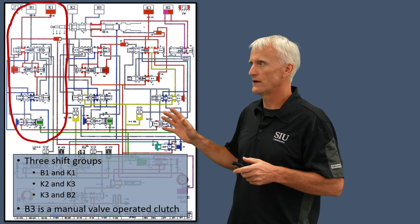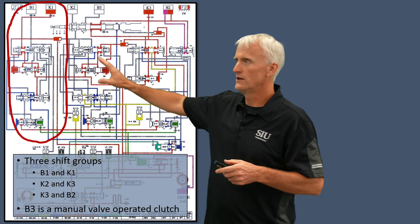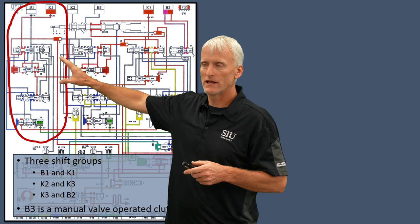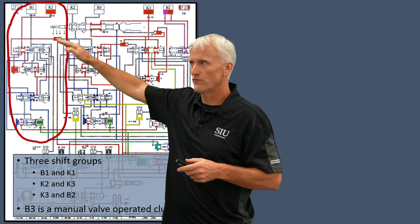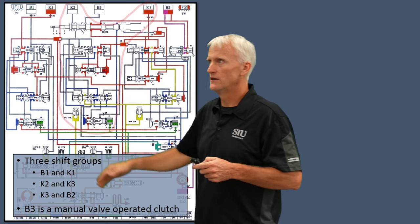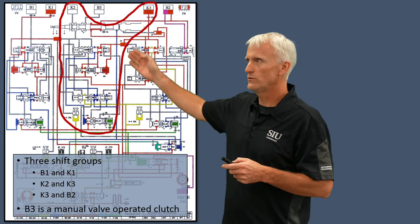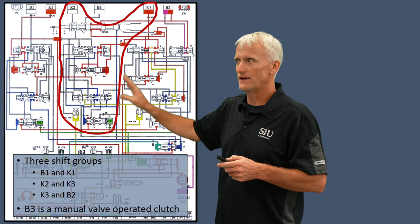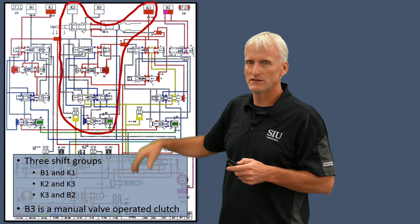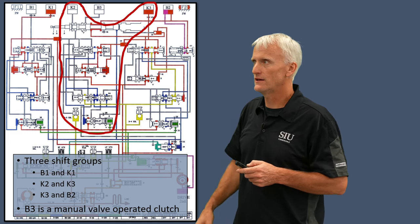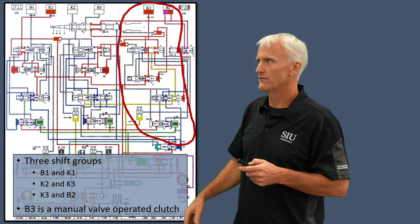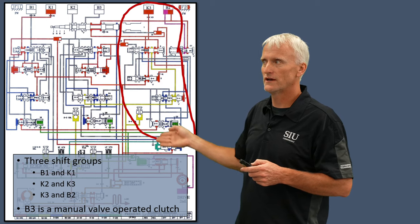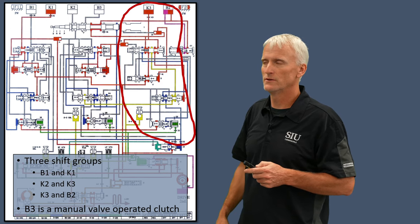In summary, this is the group for the B1 and K1 clutch with its four valves. For the K2 and K3 we've got four valves as well — that's the shift group for that. And for the K3 and B2 clutch, we've got its grouping of valves.